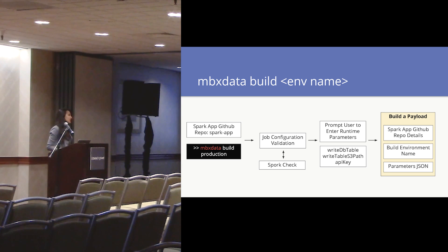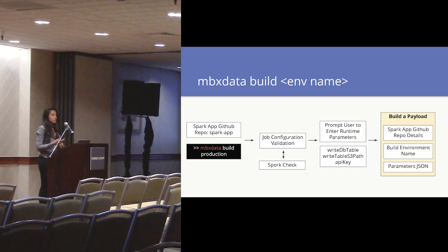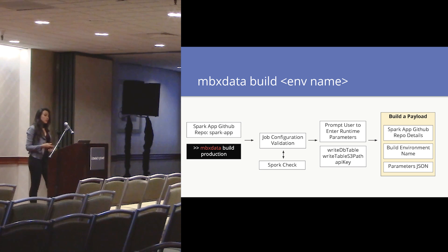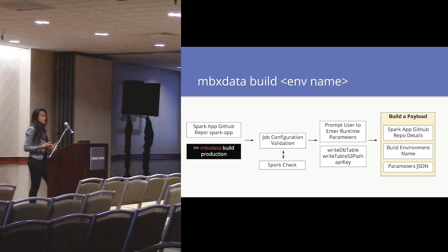Now you have your Spark application in a GitHub repo with a job configuration associated with it. The next step is to actually build this application so you can run it in production. You type MBX data build and provide an environment name, which builds a stack according to that build. In this example, we're using production. The first step is that your job configuration is validated, and once validated, you're prompted for your runtime variables defined in the job configuration. Then MBX data build packages all this information into a payload containing the GitHub repo information, the build environment name, and the key-value pairs for the parameters JSON.